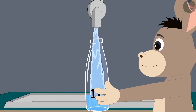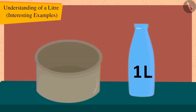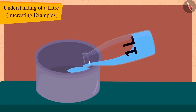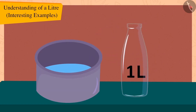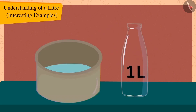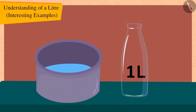Bholla once again filled that one litre bottle with water and this time he tried to fill his pot with it. But this time the one litre bottle was empty, yet the pot also remained quite empty. Children, what does this mean? This means that Bholla's pot has a capacity of more than one litre.